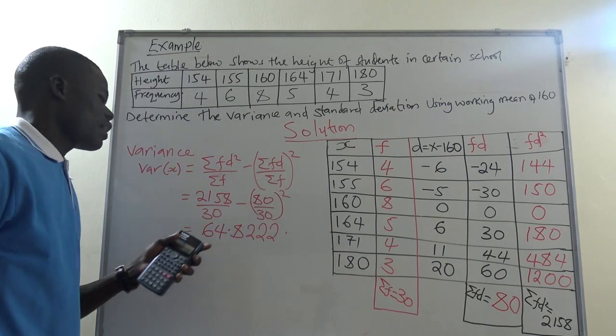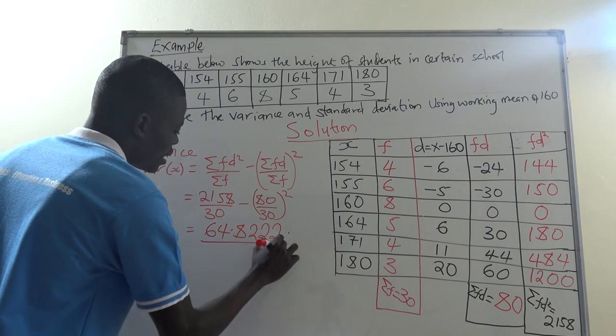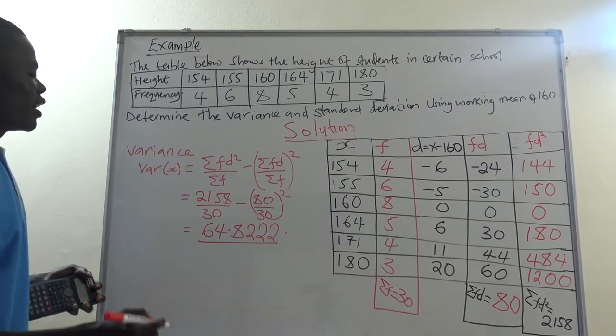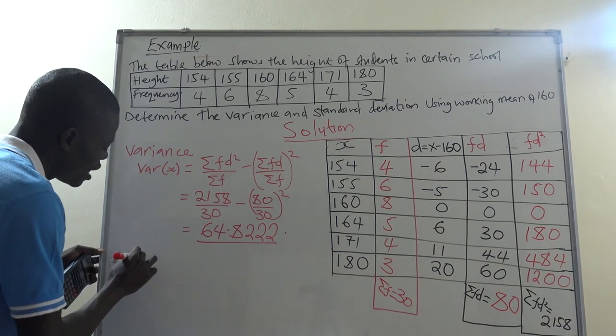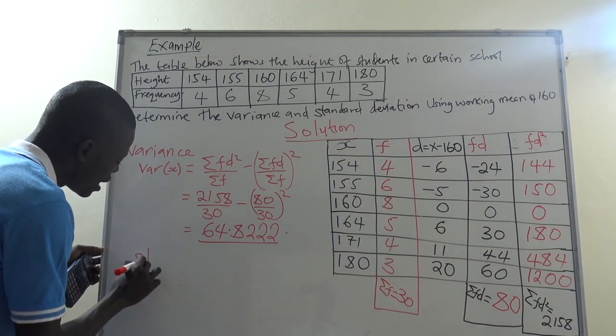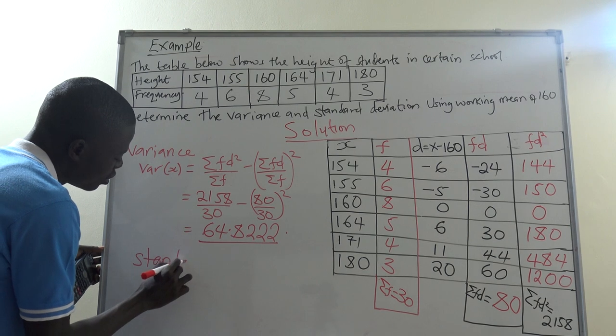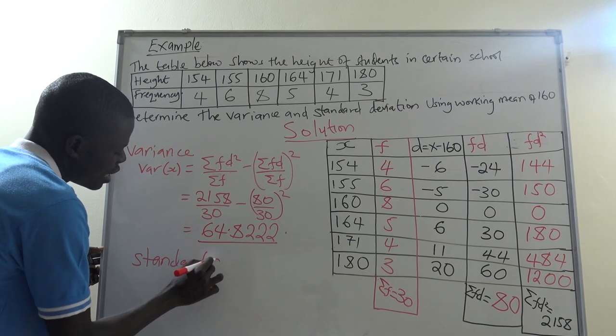But we can stop on this one. This one becomes our variance of the data given. And then we go ahead and look for standard deviation.